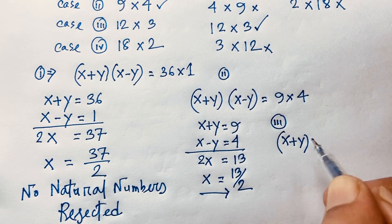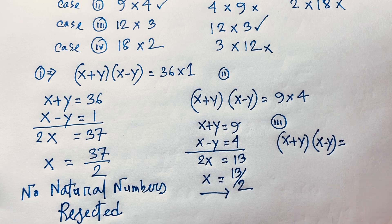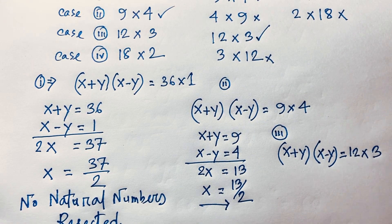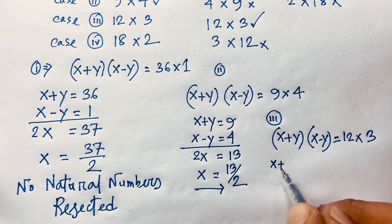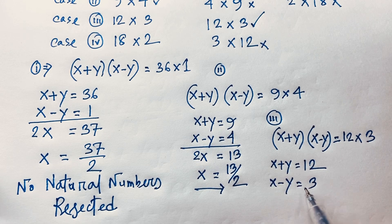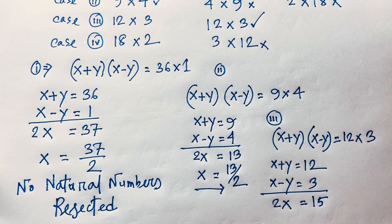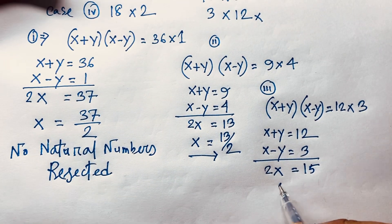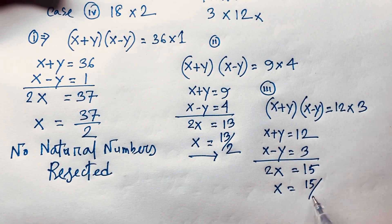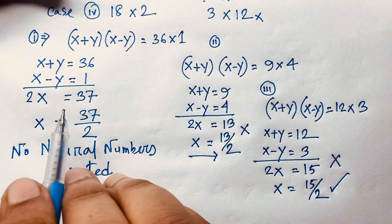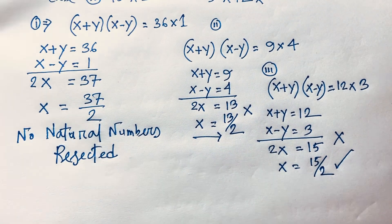Case 3: (x plus y)(x minus y) = 12×3. So x plus y = 12 and x minus y = 3. Adding both equations gives 2x = 15, so x = 15/2. This is also a fraction, not a natural number, so Case 3 is rejected as well.